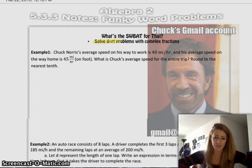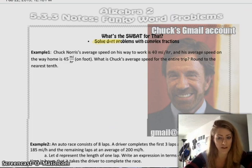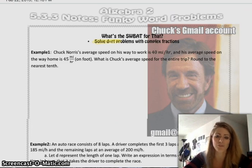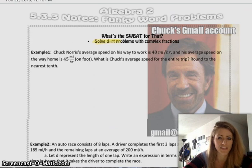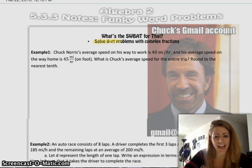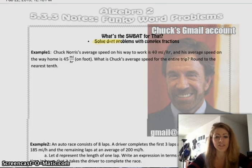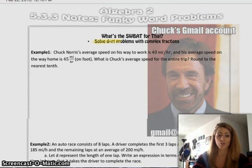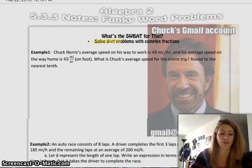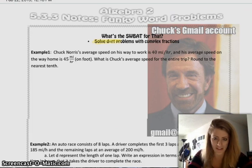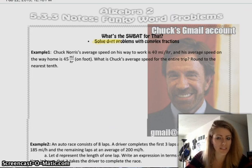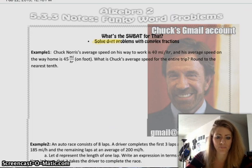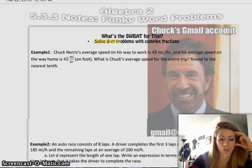Example one. Chuck Norris' average speed on his way to work is 45 miles an hour, and his average speed on the way home is 45 miles an hour. Don't worry, it's on foot. What is Chuck's average speed for the entire trip? Round to the nearest tenth. So, our setup for this problem is we have to start with two separate equations for his trip on the way to work and then his trip on the way home from work. No, it's not gonna be just 40 plus 45 divided by 2.